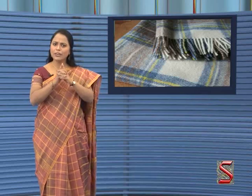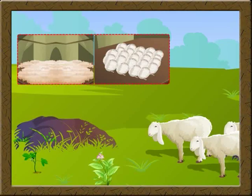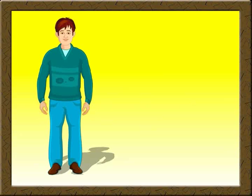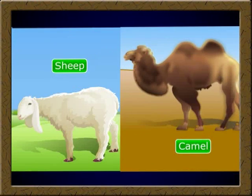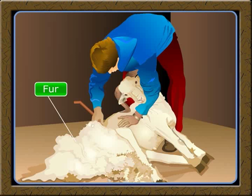Another natural cloth is wool. We wear woolen clothes in winter to keep our body warm. Sweaters are made of wool. Woolen clothes do not allow the body heat to go out, and that's how we feel warm. Wool is obtained from the fur of sheep and some other animals.